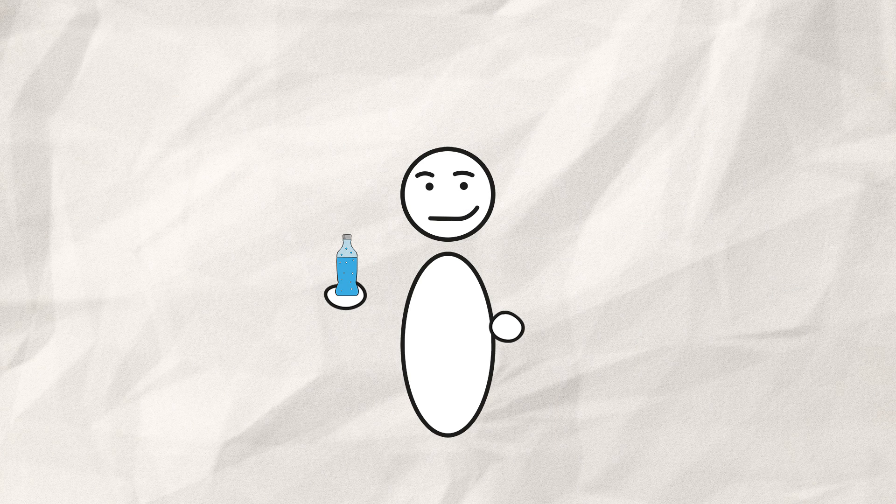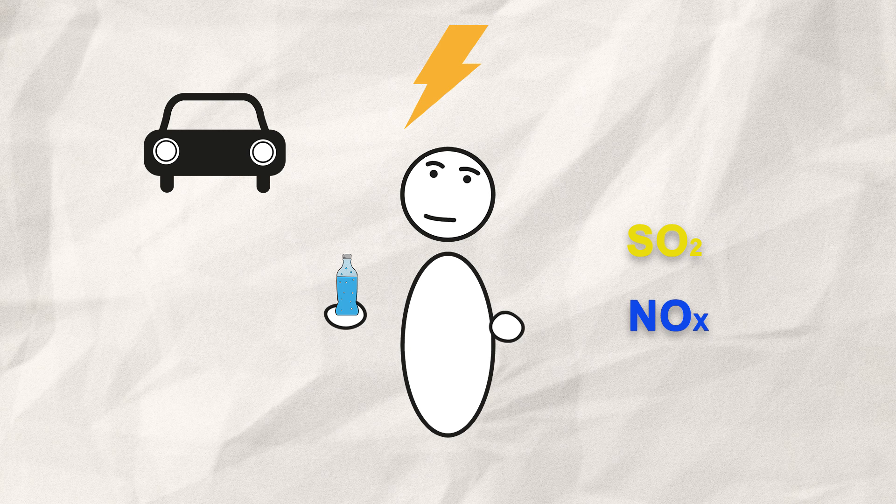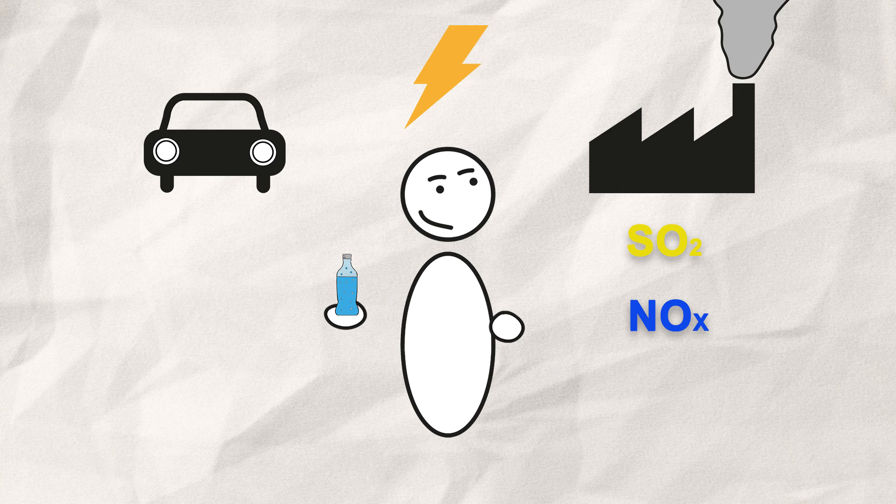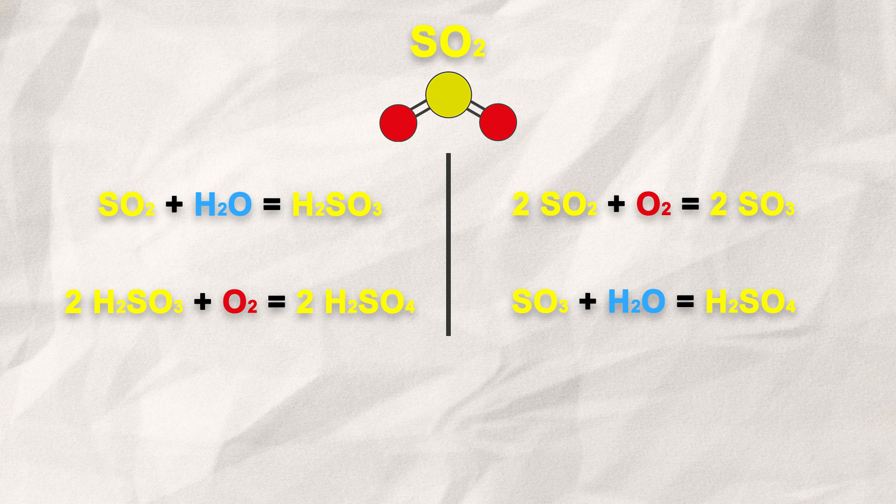Still, carbonic acid isn't that strong. The real problem lies with the other two chemicals, sulfur dioxide and nitrogen oxides. These are produced by cars, energy production, or our industry as a waste product. SO2 reacts with oxygen and water in two ways, but the end result is always sulfuric acid.